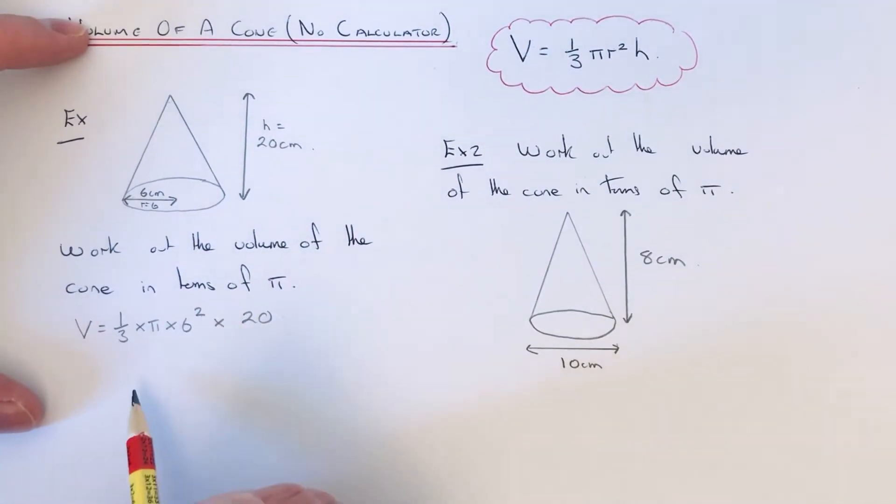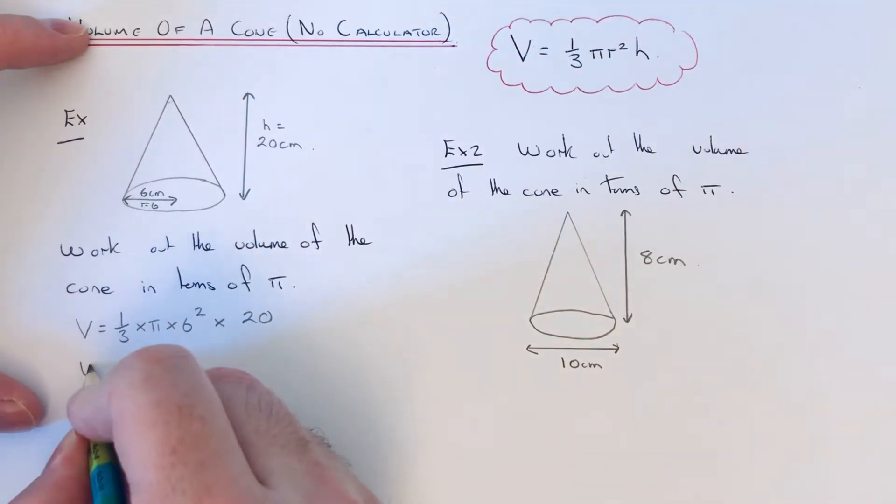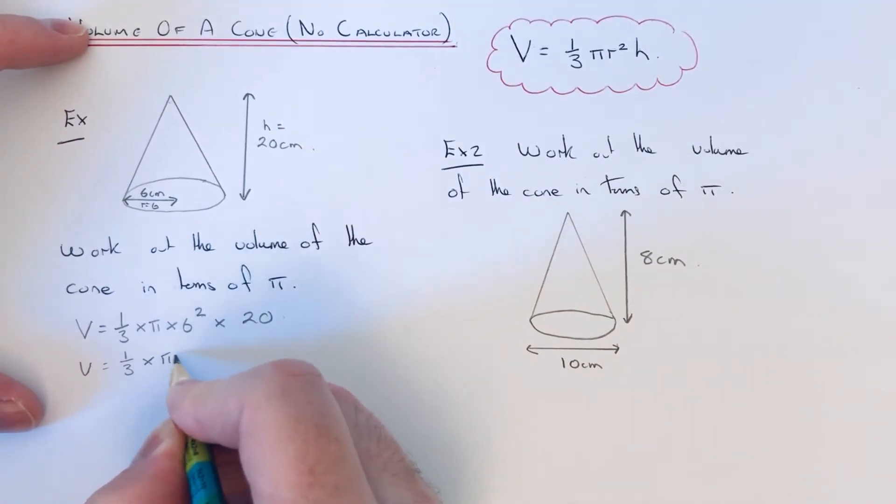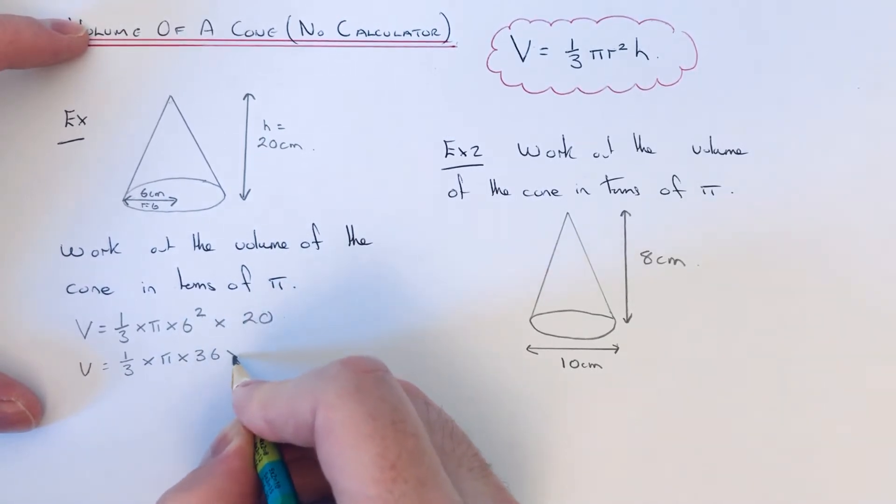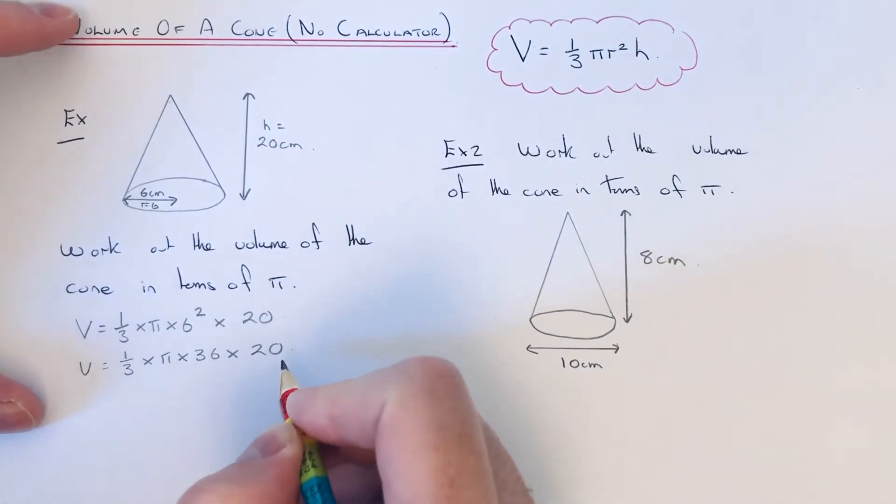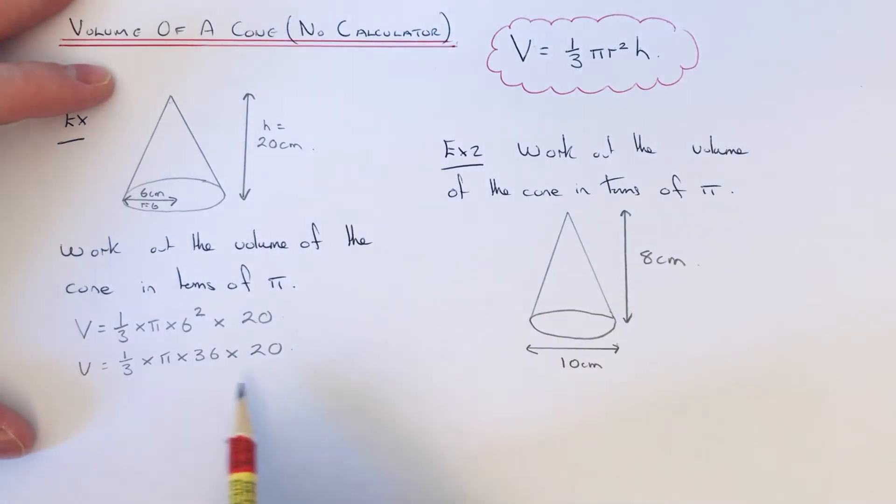The first thing I'm going to do is work out 6 squared, which is 36. So we've got one third times pi times 36 times 20. We can now multiply one third by 36. To do this we just need to divide 36 by 3, which gives us 12. So we get 12 times pi times 20.